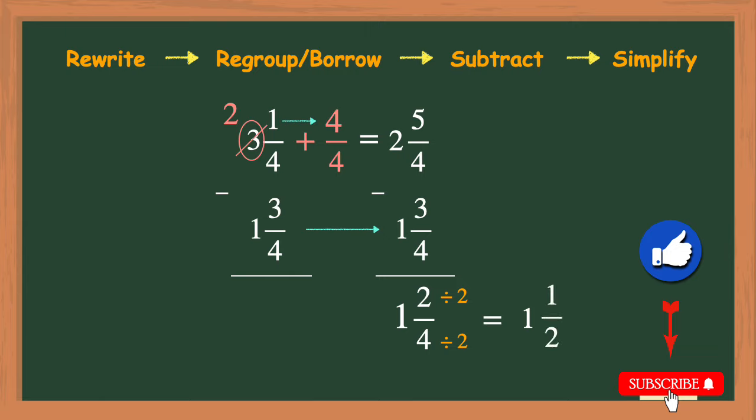2 divided by 2 is 1 and 4 divided by 2 is 2 and our simplified answer is 1 and a half.